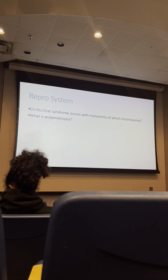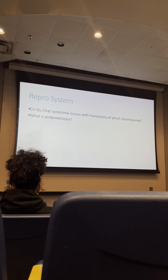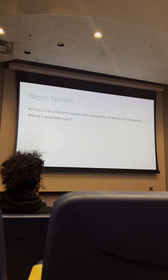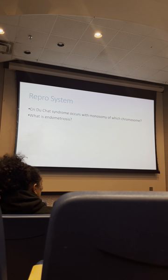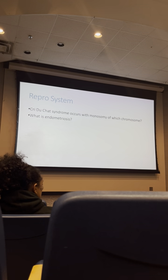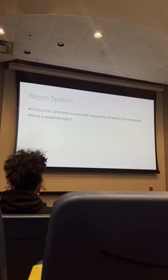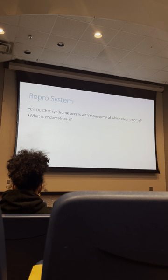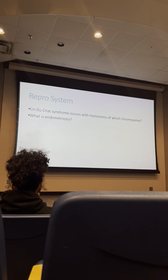Endometriosis is the growth of endometrial tissue outside the uterus — anywhere it should not be. Common locations include the fallopian tubes, outside the uterus on the parametrium, and inside the abdominal cavity. It presents with infertility because bleeding into the abdominal cavity irritates tissue, causes inflammation, damages cells, and causes scarring — particularly in the fallopian tubes, blocking proper travel of the egg or sperm.